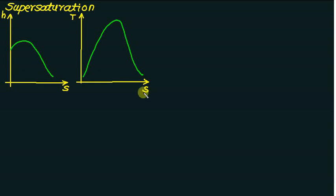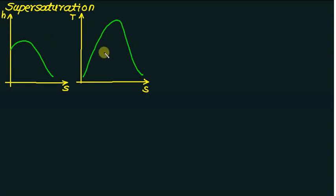And one is the temperature versus entropy diagram. This zone is called the wet zone, this one is called the saturation line, and this zone is called the superheat zone. In the TS plot, inside the dome, we have a wet region. This region is called the saturated liquid line and this region is called the saturated vapor line. And on this side we have a superheat region.